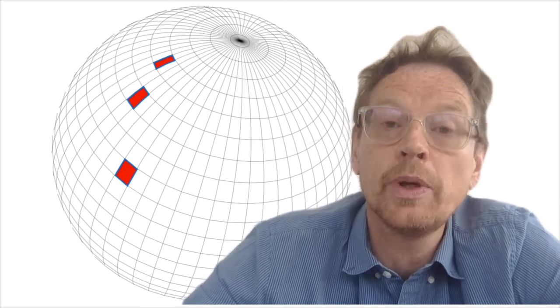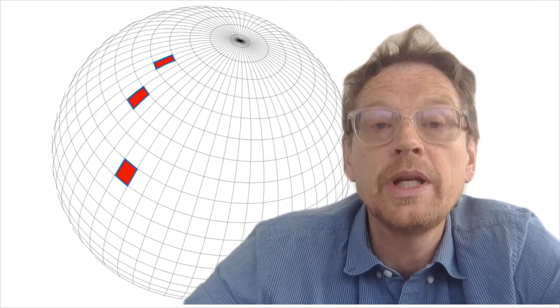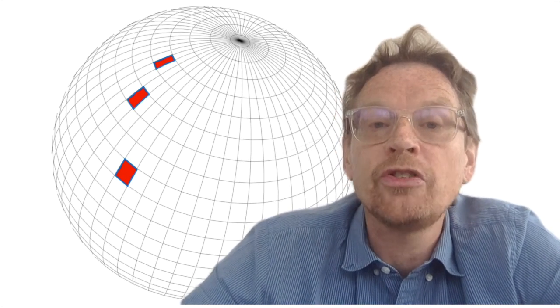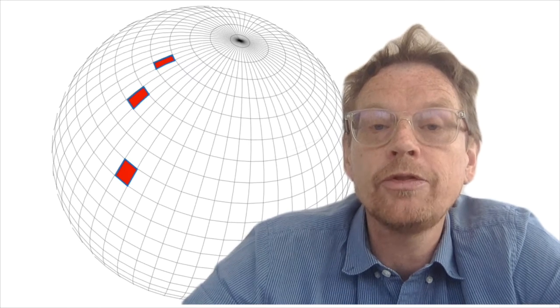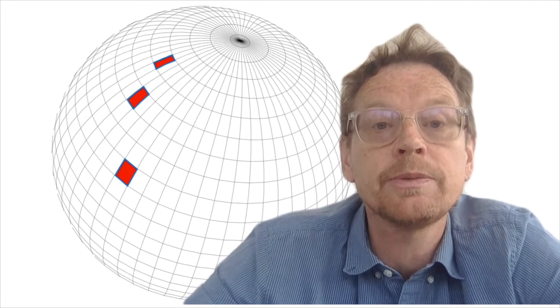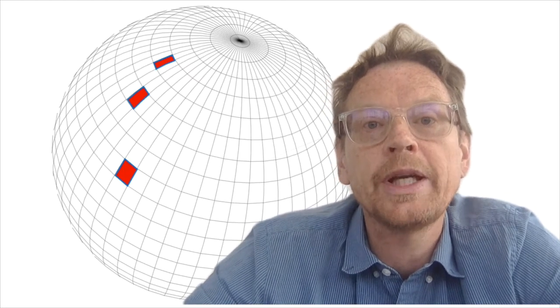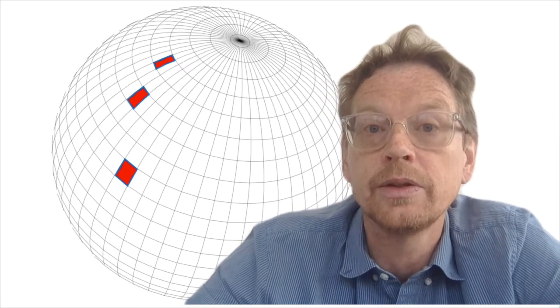This means if we want to take a spatial average we need to weight by the cosine of the latitude. Now it sounds like a minor point but in fact it can be quite important, especially if you're looking at a field which has strong spatial gradients in the latitude direction.